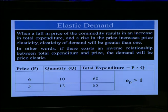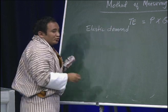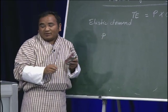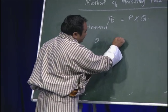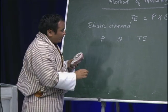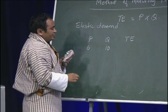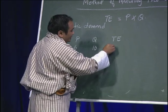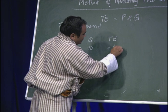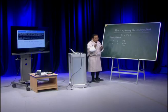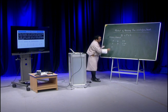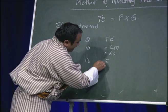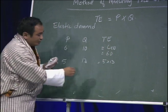For example, for elastic demand using the total expenditure method: when price is Nu 6 and quantity is 10 kg, total expenditure is 6 × 10 = 60. When price decreases to Nu 5 and quantity increases to 13 kg, total expenditure is 5 × 13 = 65.